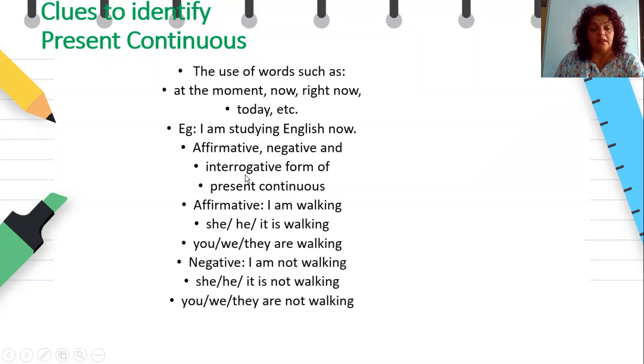Affirmative, negative, and interrogative forms of present continuous are: Affirmative: I'm walking. He, she, it is walking. We, you, they are walking. Negative: I'm not walking. He, she, it is not walking. And we, you, they are not walking.